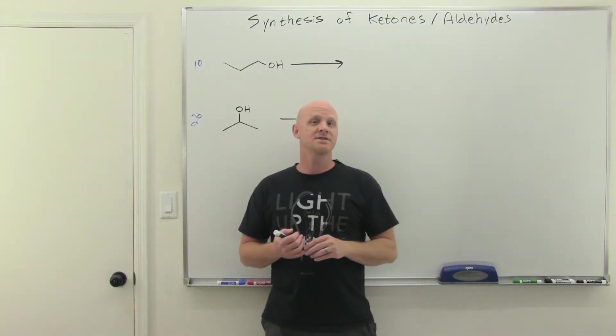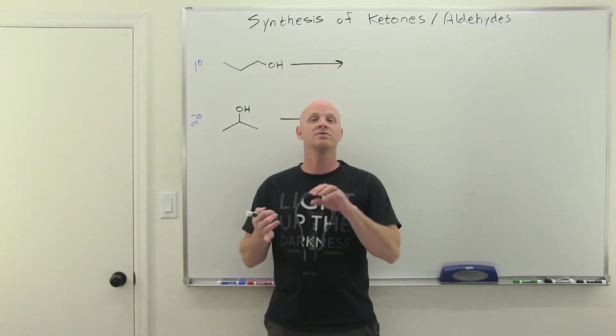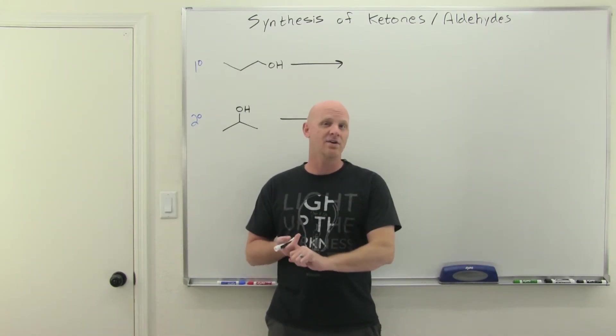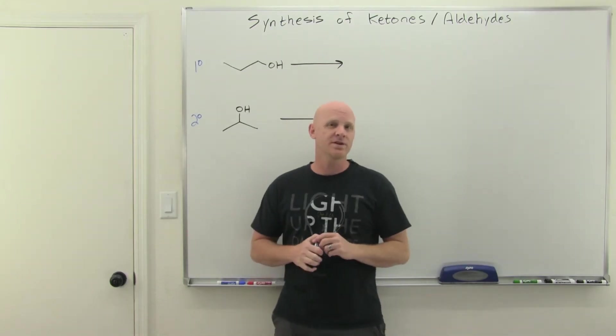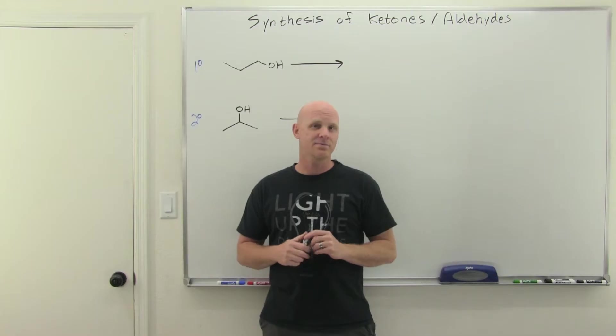We're going to review the synthesis of ketones and aldehydes by the oxidation of primary and secondary alcohols, the ozonolysis of alkenes, the hydration of alkynes, and then a couple reactions we learned in the last chapter: Friedel-Crafts acylations and the Gatterman-Koch synthesis for making benzaldehydes.